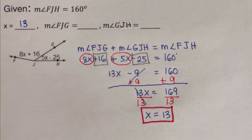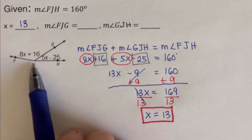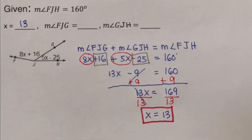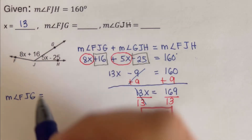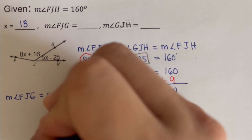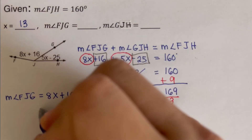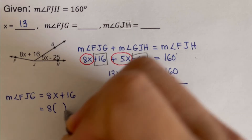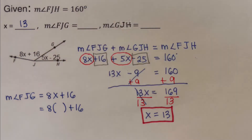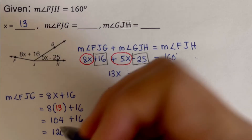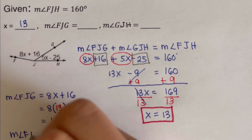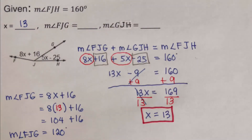Now we solve for the measure of angle FJG. Plugging X equals 13 into 8X plus 16: 8 times 13 is 104, plus 16 equals 120 degrees. So the measure of angle FJG is 120 degrees.